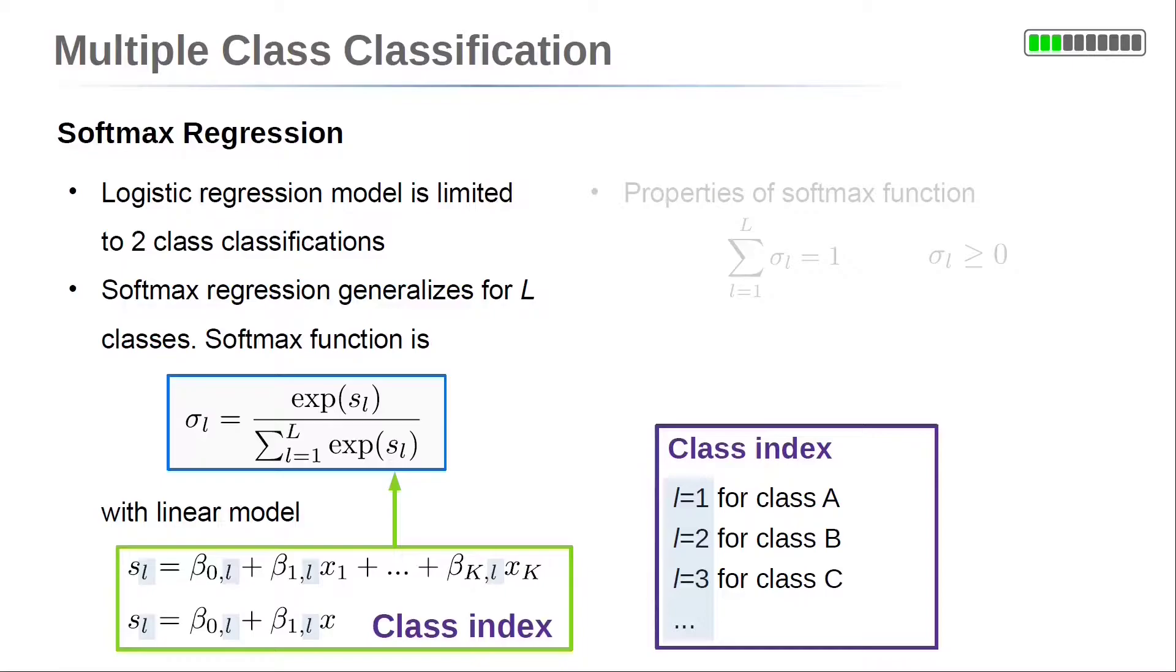So every beta parameter has two subscripts: one for the variable, the other for the class of the linear model it belongs to.